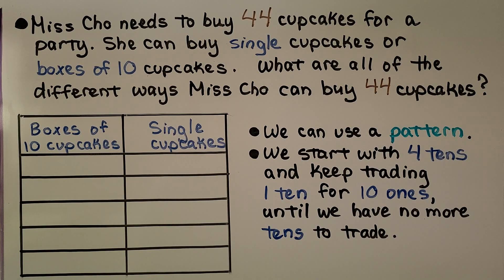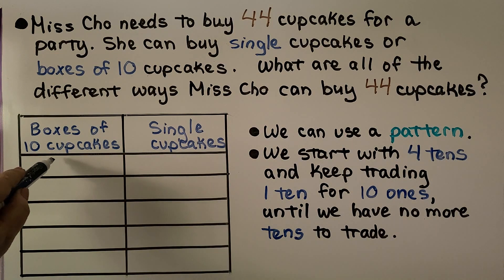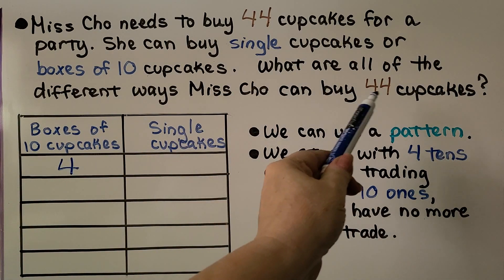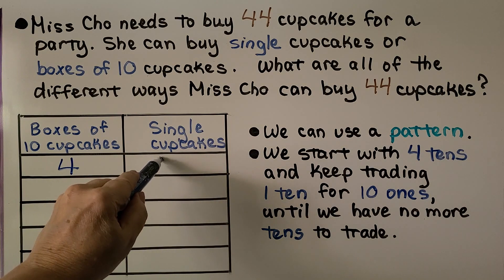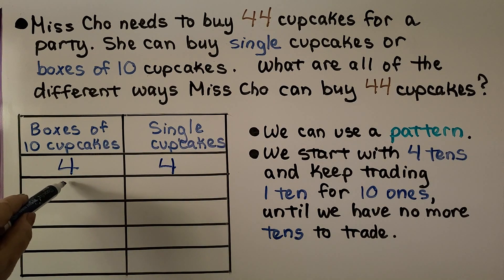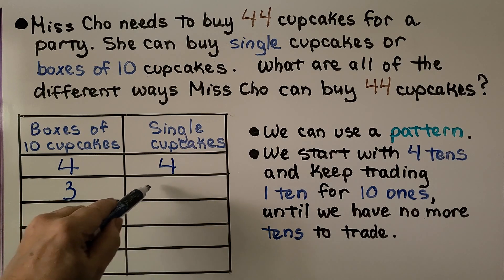We can use a pattern. We can start with 4 tens because it's 44 and keep trading 1 ten for 10 ones until we have no more tens to trade. We start with 4 boxes of 10 cupcakes and she's going to have 4 single cupcakes. And we can trade 1 ten for 10 ones. So this is going to be a 3 and this will be a 14.